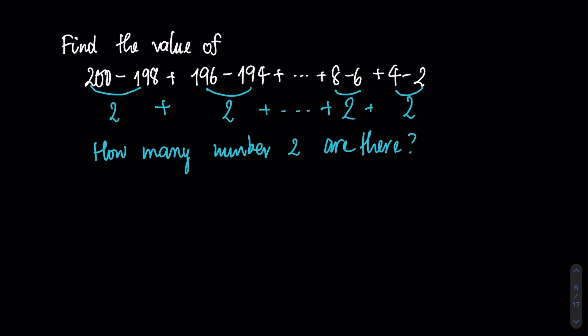So we take 200 minus 2 divided by the distance between 2 numbers, which is 2, then plus 1. We have 100 numbers.